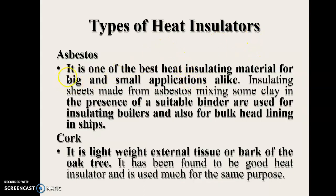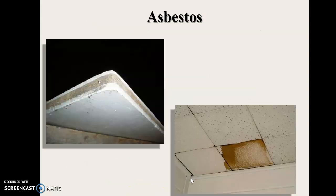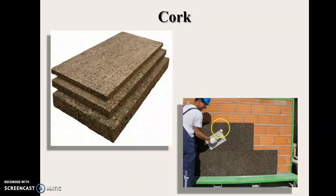The types of heat insulators also include asbestos and cork. Asbestos is one of the best heat insulating materials for both big and small applications. Sheets are made from asbestos mixed with some clay in the presence of a suitable binder, and are used for insulating boilers and for bulkhead lining in ships. Cork is the lightweight external bark, and has been found to be a good heat insulator used for much the same purpose.